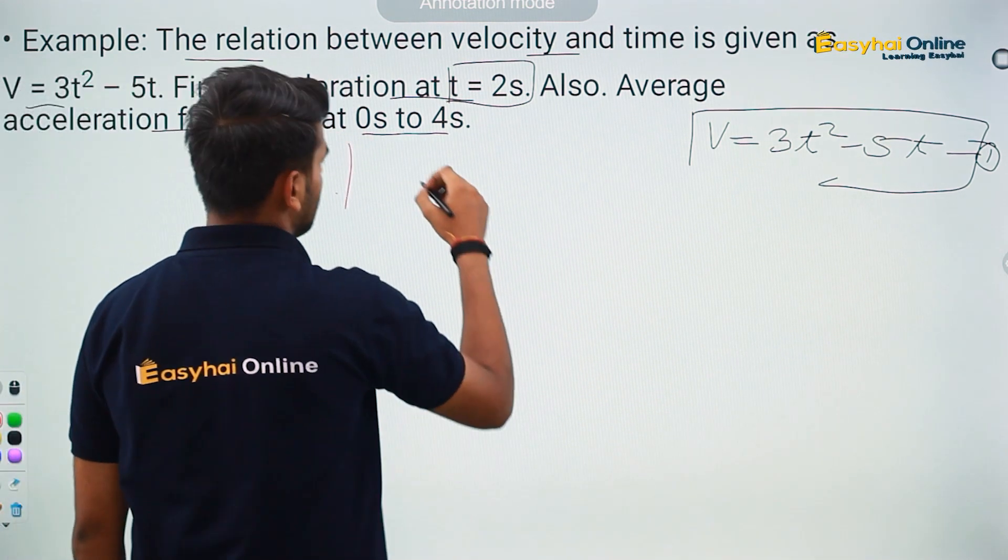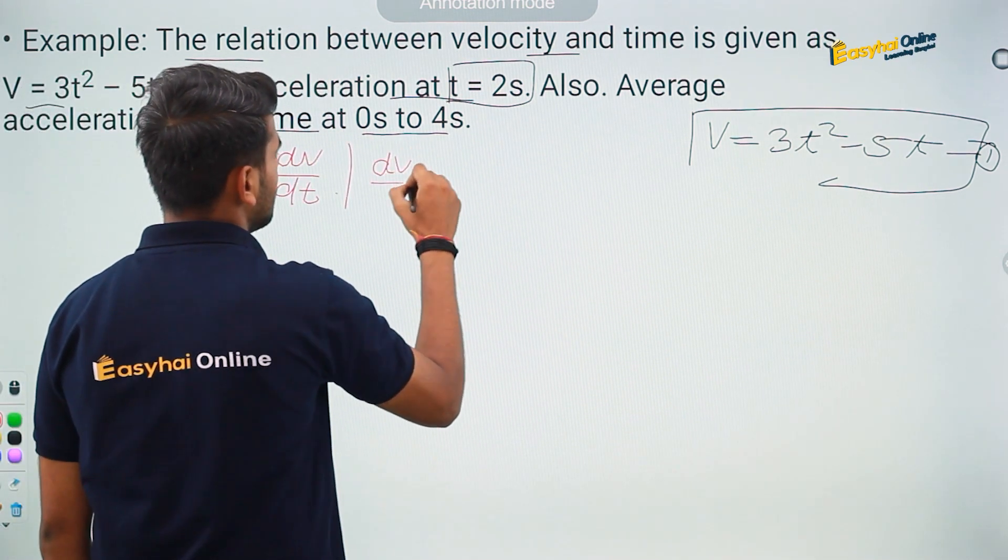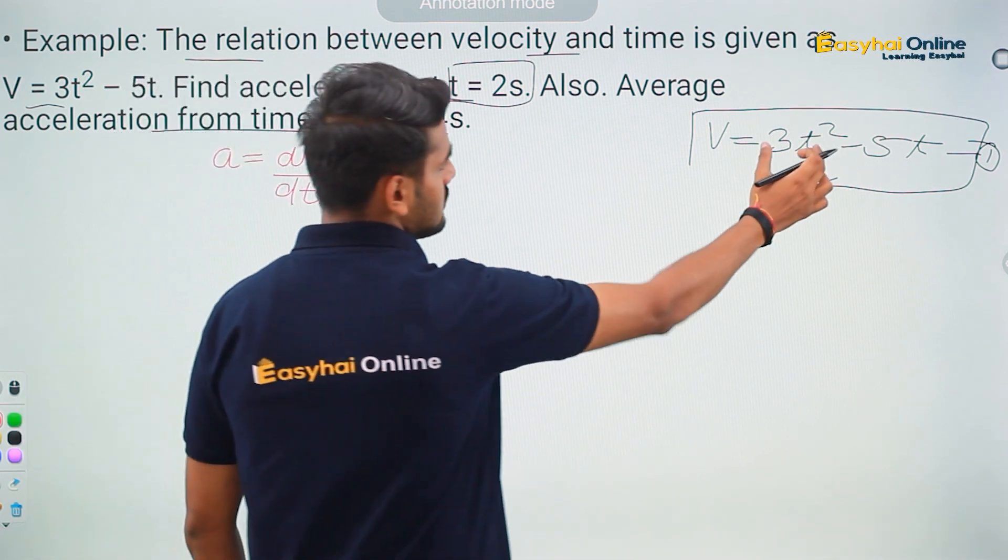I have the velocity. If I differentiate this with respect to time I will have the acceleration. Therefore, I can simply write that dv by dt is equal to the differentiation of this.